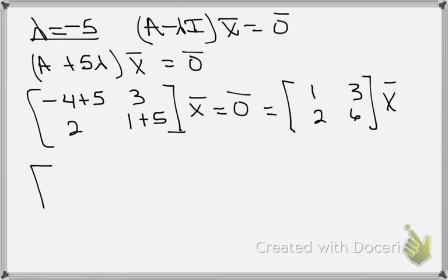If I multiply that first row, I'm solving the homogeneous system of equations now: [1, 3 | 0; 2, 6 | 0].